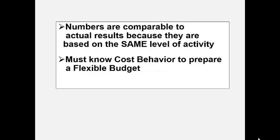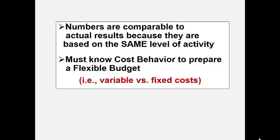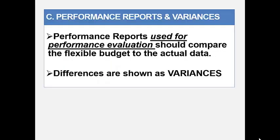Flexible budgets are useful because the numbers are comparable — they're going to be at the same level of activity. It's important to pay attention to cost behavior when preparing a flexible budget, meaning you have to know which of your costs are fixed and which of your costs are variable. When looking at performance reports and performance evaluation, you should compare the flexible budget to the actual data.